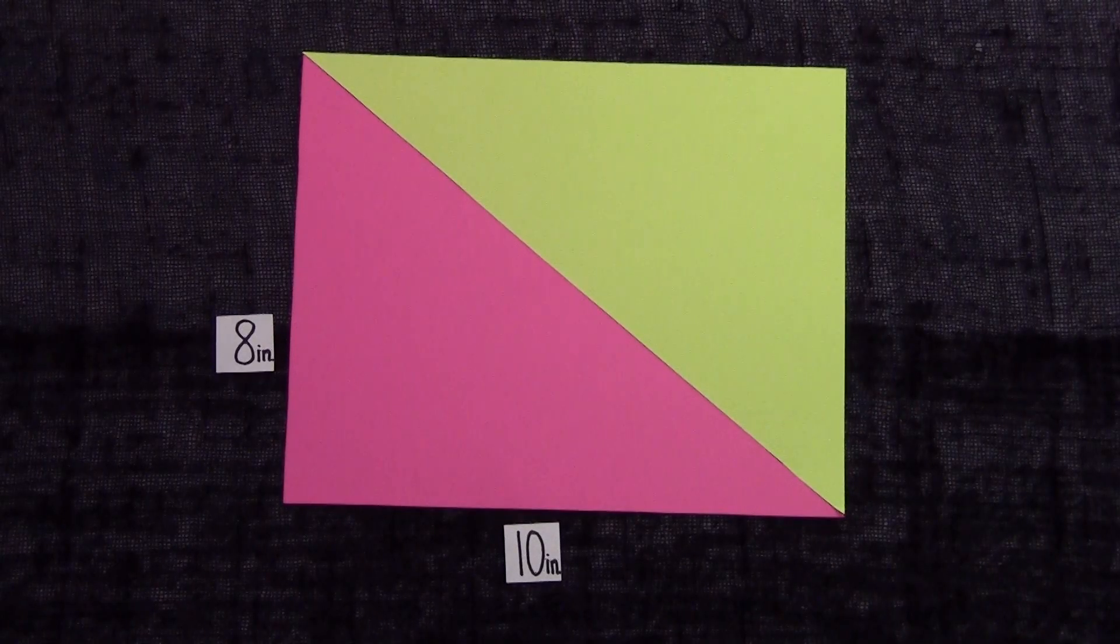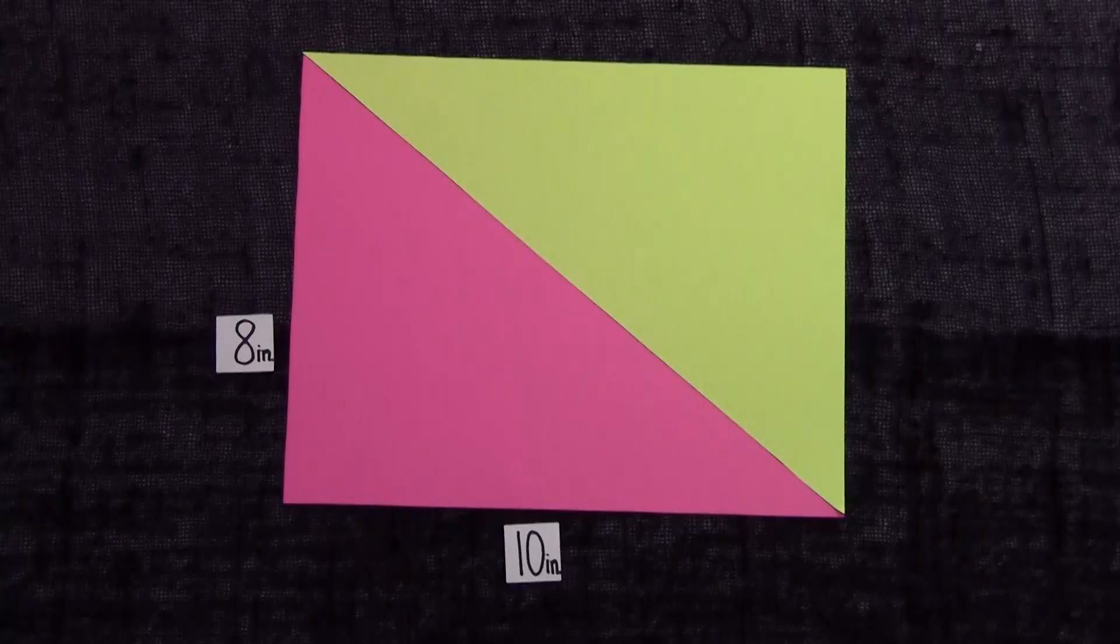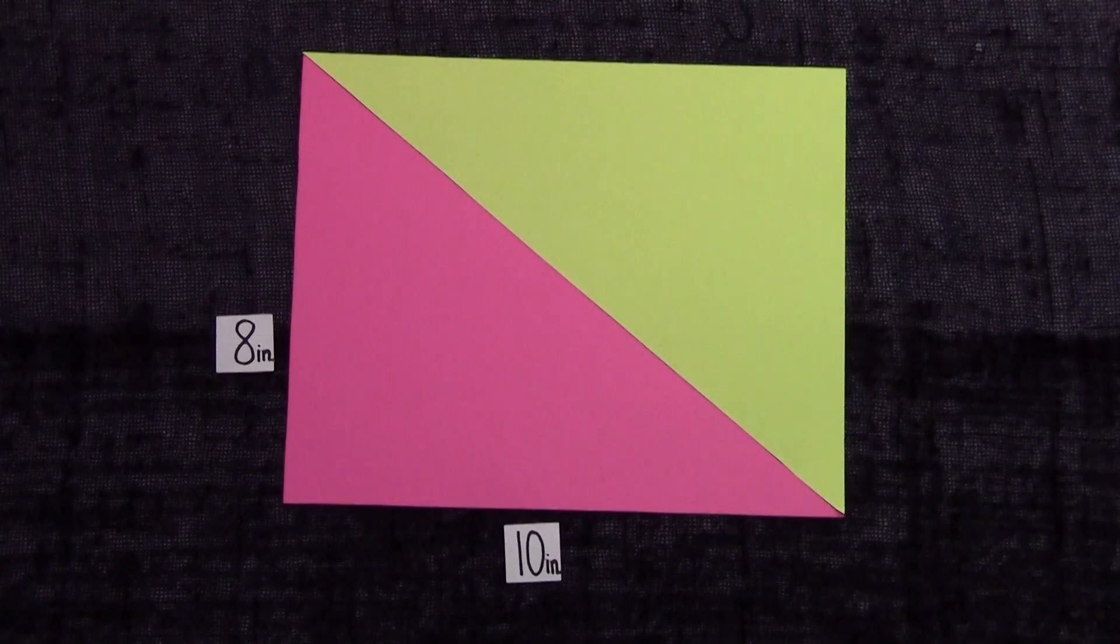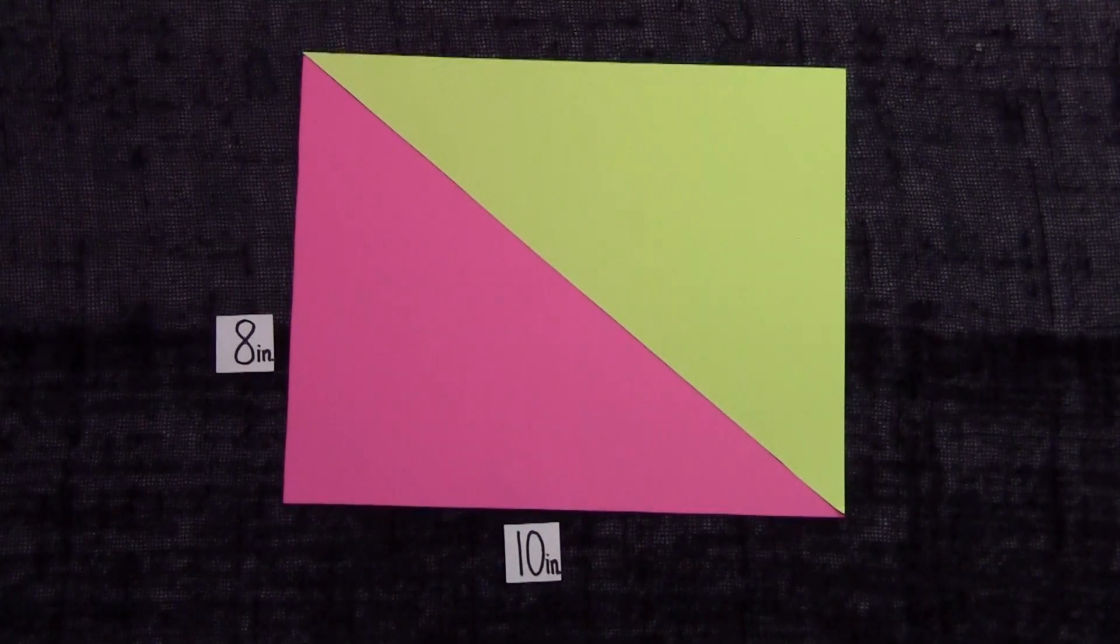So, you see it takes 2 of the triangles here to make this rectangle. Therefore, the area of this right triangle is going to be 1 half the area of this rectangle.